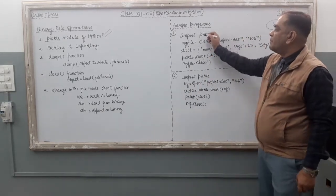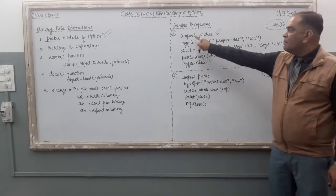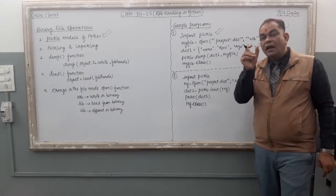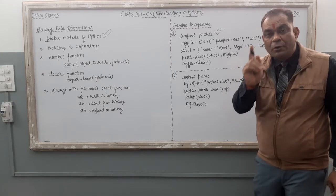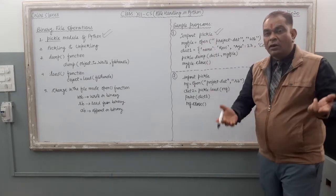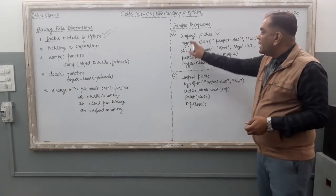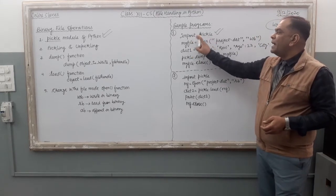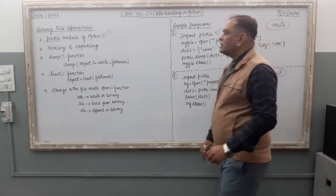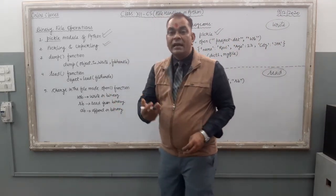In the sample program, line number one is: import pickle. Write it in small letters — 'pickle' is in small letter format only. So the first line of your program should always be 'import pickle'.